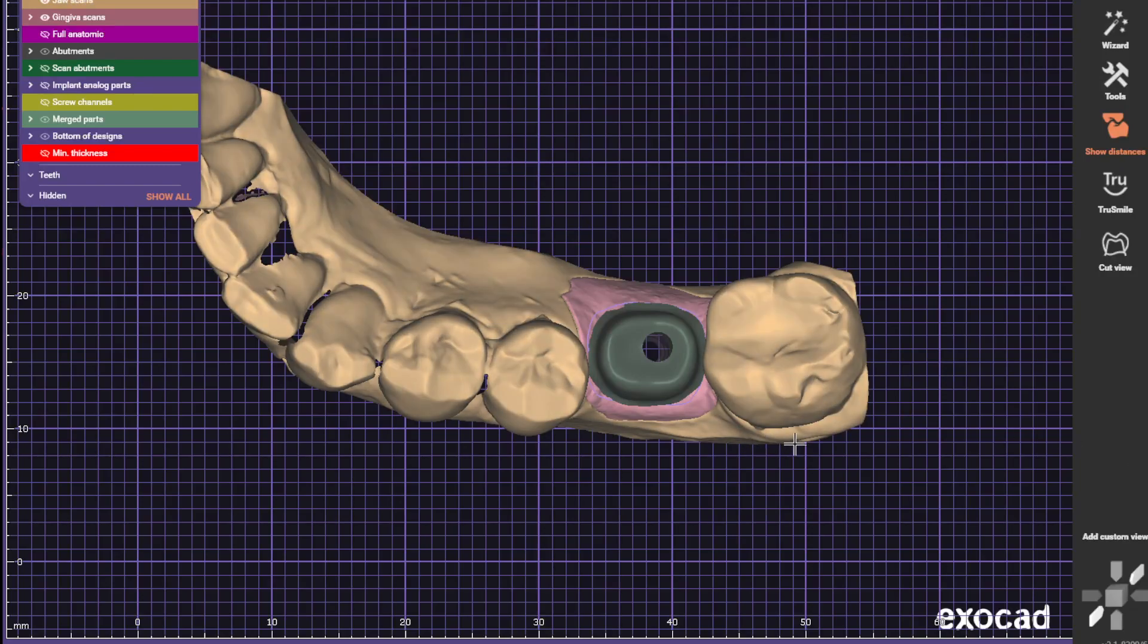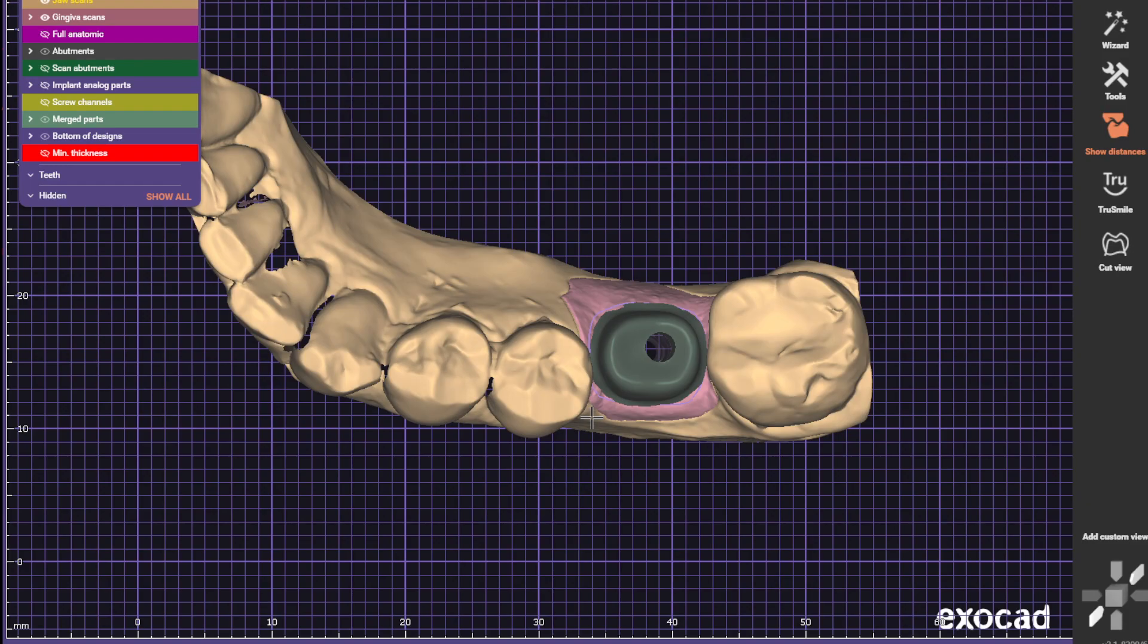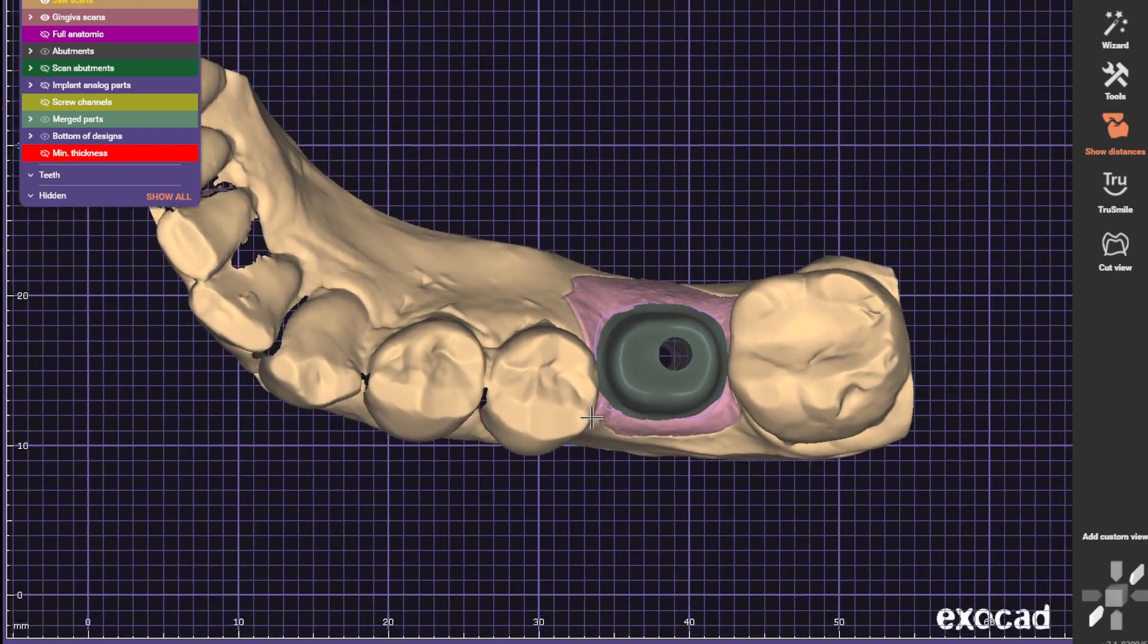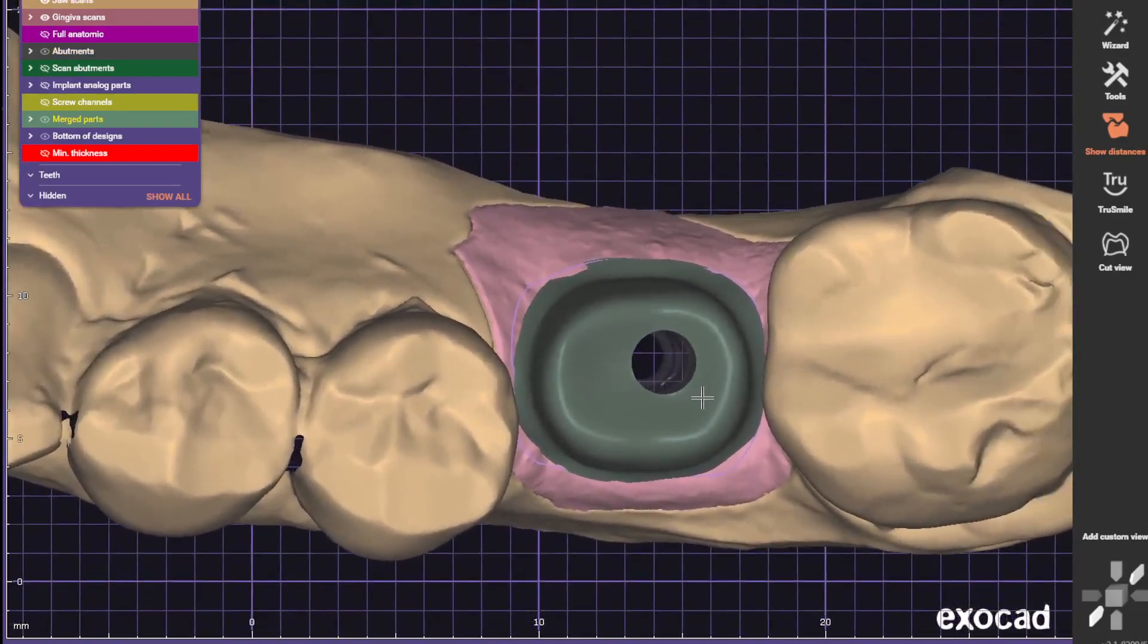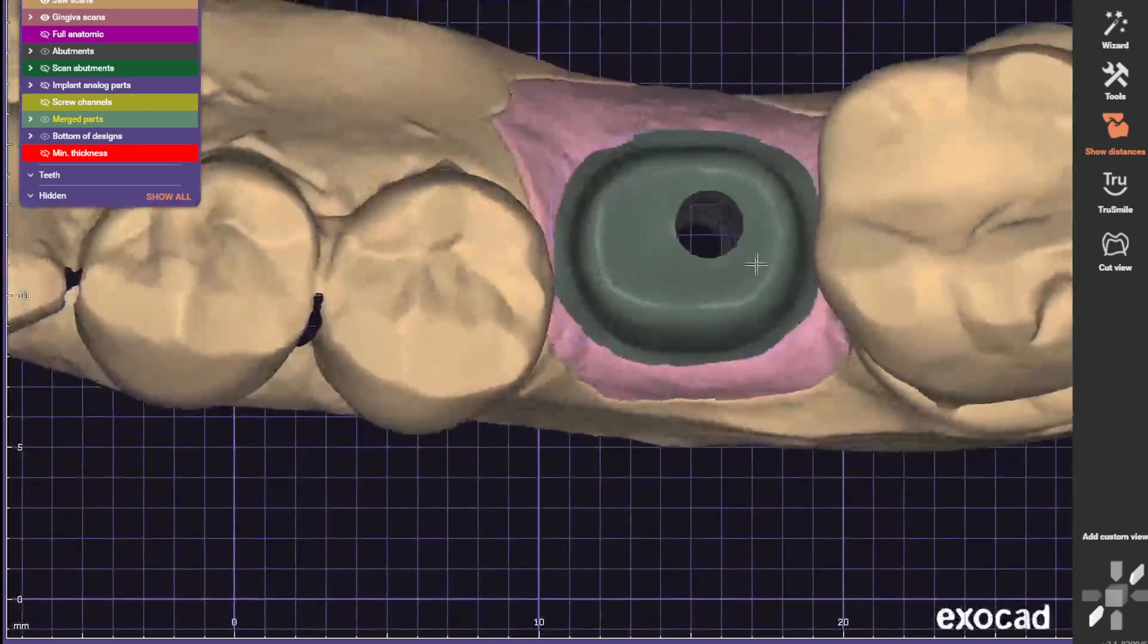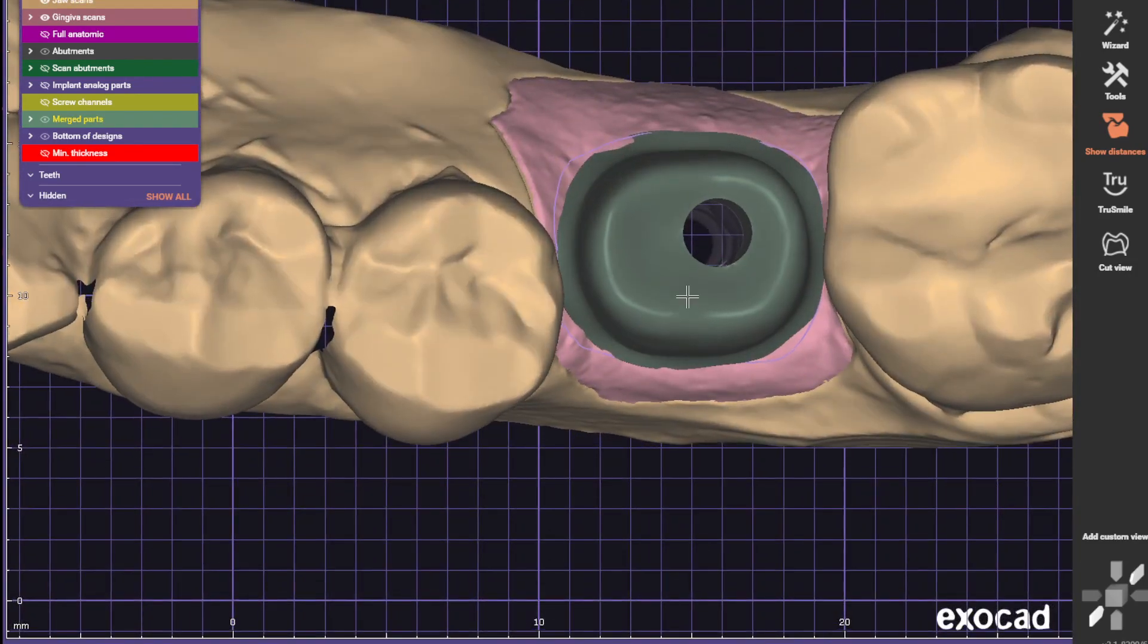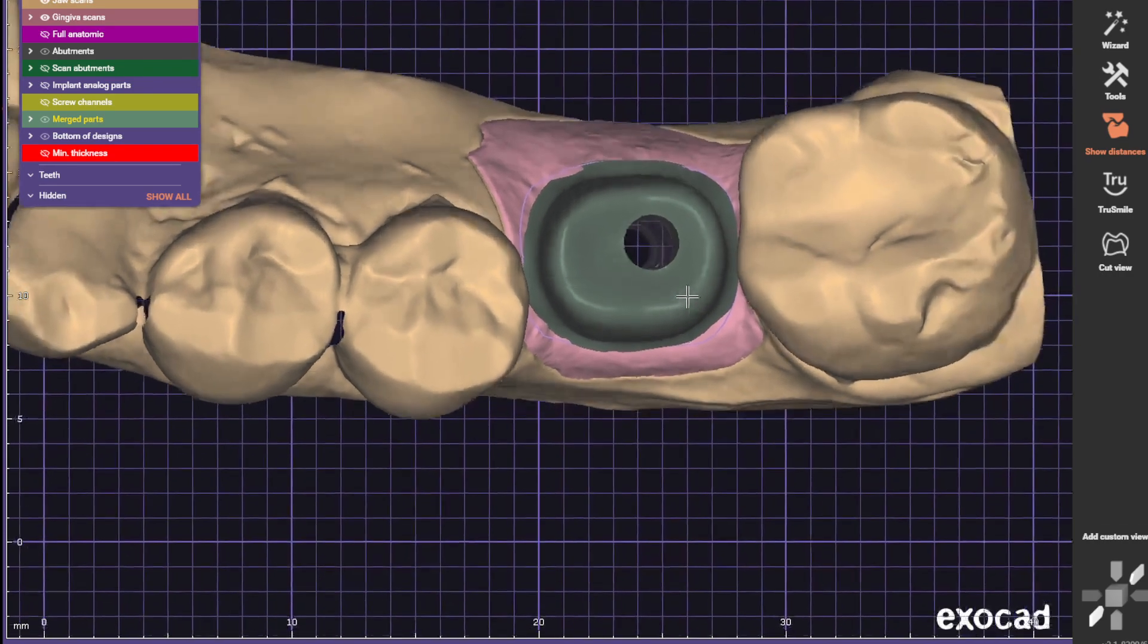Okay, here is the other one. We're gonna switch this also to screw retained. This abutment is too big—can't put the margin underneath the contact area, otherwise it's gonna be very difficult for them to even set the abutment in here.